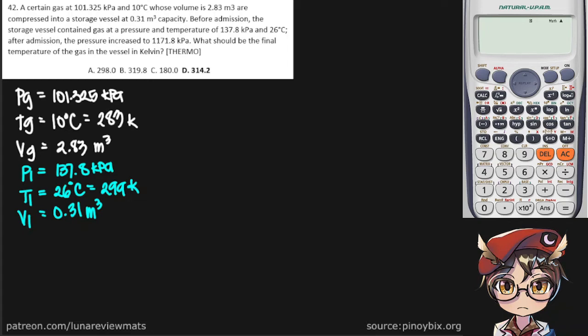After admission, the pressure increased to 1171.8 kPa. What should be the final temperature of the gas in the vessel in Kelvin? So we're looking for T2 in Kelvin, and our final volume should be the same since it is a rigid container.